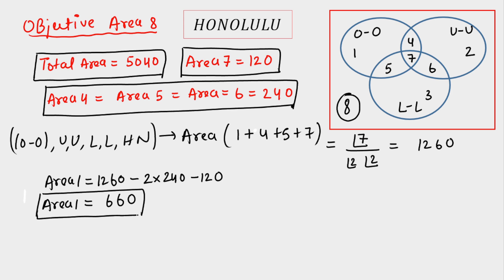If you do the same calculation for UU and LL being together respectively, you get the same result. So area 2 = 660 and area 3 = 660 by symmetry, just as we found areas 4, 5, and 6 to be equal.